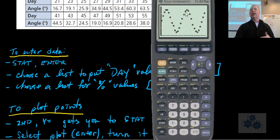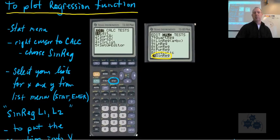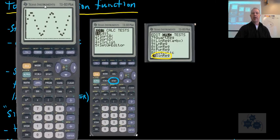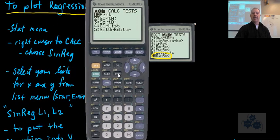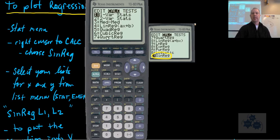And again, to plot a regression function, this is what we're going to do. We're going to go to the stat menu, and then we're going to go over to calculate, right? So we get to this calculate screen, and we want to do sine regression. So go to the calculate screen. I'll do that here now. So we're going to do stat, right cursor over to calculate. Calculate, and then I think it's near the bottom, so I'm going to go up. Yeah, it's the very bottom. So sine reg. Hit enter.